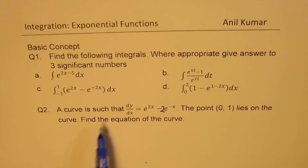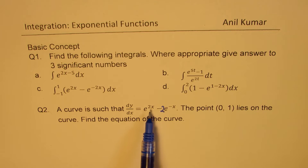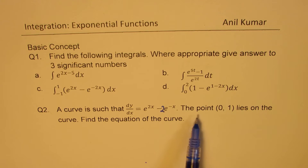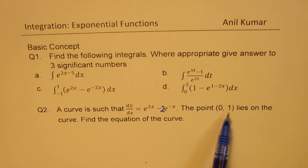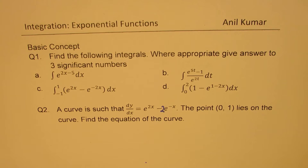Question number 2 is: a curve is such that dy/dx equals e to the power of 2x minus 2 times e to the power of minus x. The point (0, 1) lies on the curve. Find the equation of the curve.